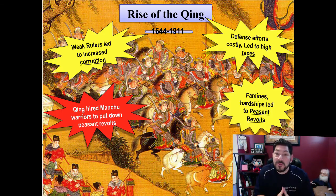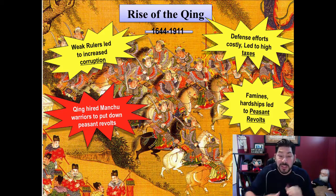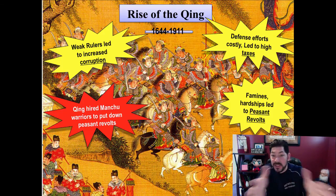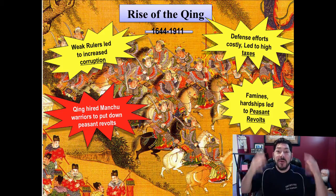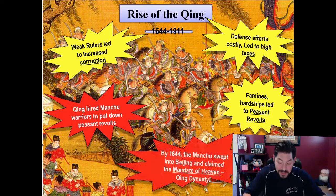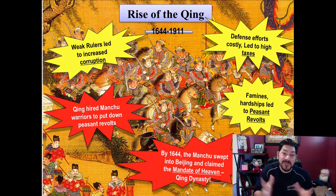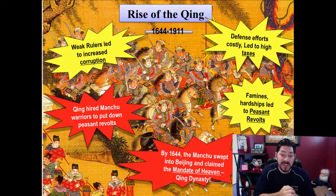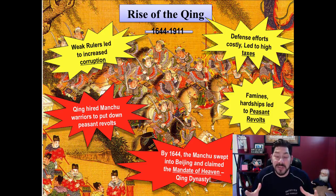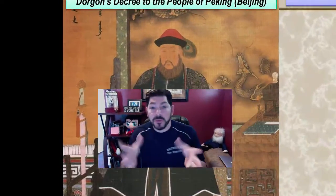The Manchus were more than happy to go over the Great Wall of China, into the gates of Beijing, and ultimately take over the government. By 1644, the Manchus swept into Beijing and claimed the Mandate of Heaven. One of the first leaders of the Qing Dynasty was Dorgon.